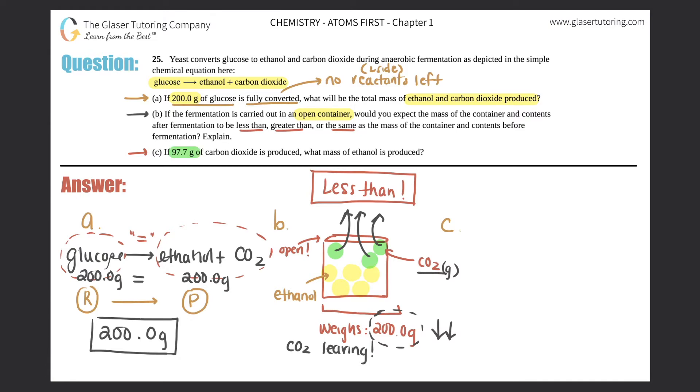Letter C: If 97.7 grams of carbon dioxide is produced, what mass of ethanol is produced? So this is kind of going back to letter A, so I'm going to just rewrite: glucose yields ethanol plus CO2. Now they're assuming that glucose, there's still 200.0 grams of glucose, and now they're telling you that there's 97.7 grams of carbon dioxide which is CO2.